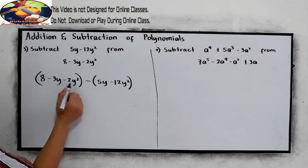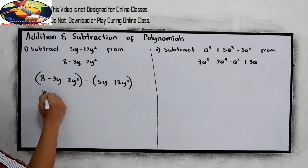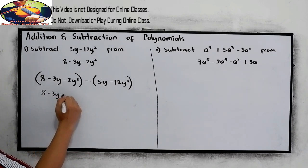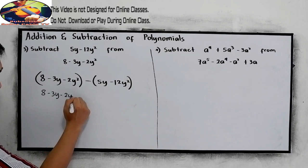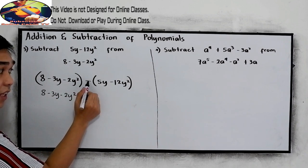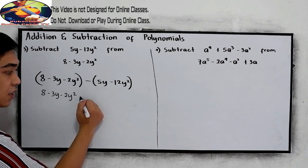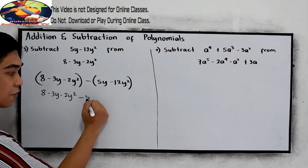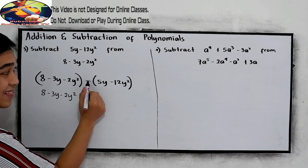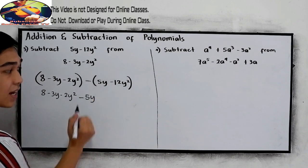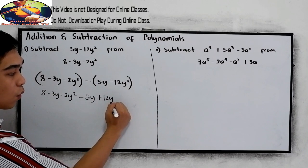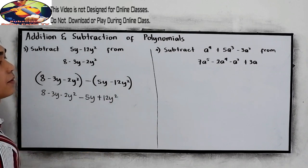Now remove the parentheses in front and distribute the negative sign. Negative times positive gives negative 5y. Negative times negative gives positive 12y squared.